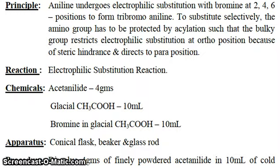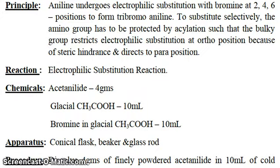What is the principle? Aniline undergoes electrophilic substitution with bromine at 2, 4, 6 positions to form tribromide. To substitute selectively, the amino group has to be protected by acylation such that the bulky group restricts electrophilic substitution at ortho positions because of steric hindrance and directs to para positions. This reaction is an electrophilic substitution reaction.